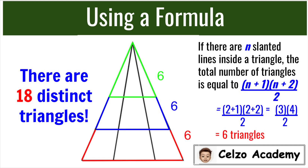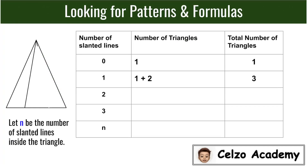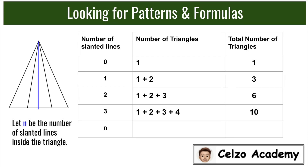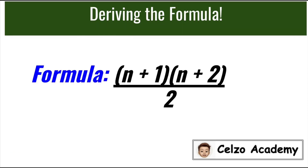Now let's look at the pattern and derive the formula. If there are zero slanted lines, there is 1 triangle. If n = 1, the number of triangles is 1 + 2 = 3. If n = 2, the number is 1 + 2 + 3 = 6 triangles. If n = 3, we have 1 + 2 + 3 + 4 = 10. In general, if there are n slanted lines, we sum 1 + 2 + ... + (n + 1), and the simplified form of that sum is (n + 1)(n + 2) / 2.